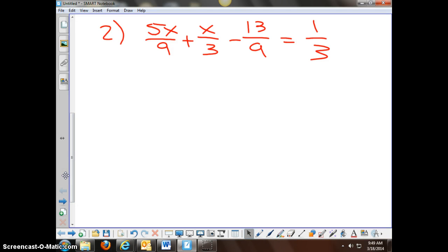We're on our second one now. We've got some fractions here, some addition and subtraction. 5x over 9 plus x over 3 minus 13 ninths equals 1 third is our problem.